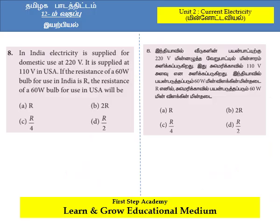In English: In India, electricity is supplied for domestic use at 220 volts; it is supplied at 110 volts in USA. If the resistance of a 60-watt bulb for use in India is R, the resistance of a 60-watt bulb for use in USA will be — the answer is option C: R by 4.